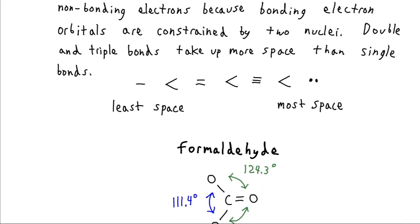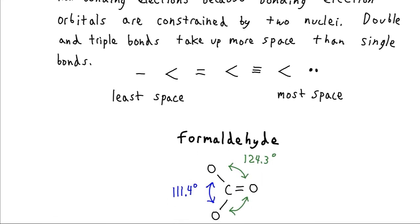So if we have something like formaldehyde, normally, ideally, we would have 120 degree bond angles between everything. But since we have a double bond here, that has a little bit of extra repulsion to it. And so it's going to get a little bit more berth, 124.3 degrees. And these single bonds are going to be pushed together and only have 111.4 degrees of space.